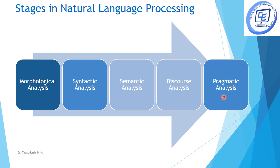Next is pragmatic analysis. In pragmatic analysis we try to identify the intended meaning of the given sentence. In semantic analysis we identify whatever meaning the words are giving us, whereas in pragmatic analysis we try to identify the intended meaning. For example, 'he fought like a lion' — here instead of meaning like an animal, it is the courage or bravery we are talking about. So this was the basic introduction to natural language processing and its stages.